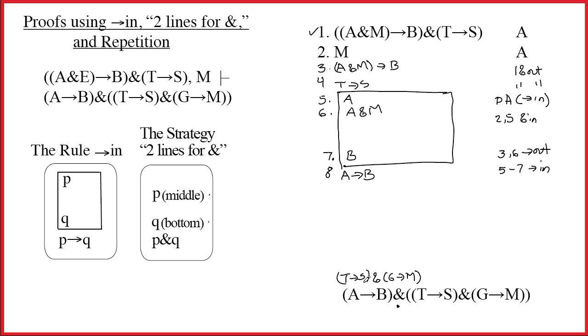We have to prove T arrow S and G arrow M. What's its main connective? It's an ampersand. So just like we did to get started, we now need to do two lines for ampersand to prove this. So what I'm going to do is pencil in T arrow S and G arrow M. T arrow S goes in the middle of the space. G arrow M goes at the bottom of the space. Now I've left myself space to prove these. Not so much, but enough. And that's my job.